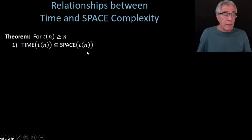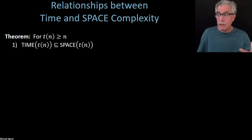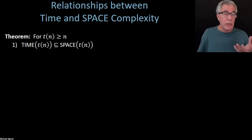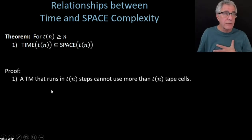The containment TIME(T(n)) ⊆ SPACE(T(n)) follows without doing any work at all. Suppose you have a machine that runs in n² time — how could it possibly use n³ space if it's running only in n² time? Even if it tries to use as many tape cells as possible, sending its head out into the blank portion of the tape, in n² time it's only going to be able to use n² space. So the very same machine that runs in T(n) time also runs in T(n) space.